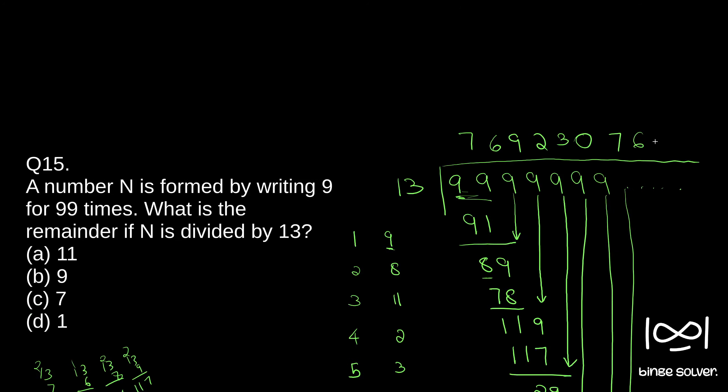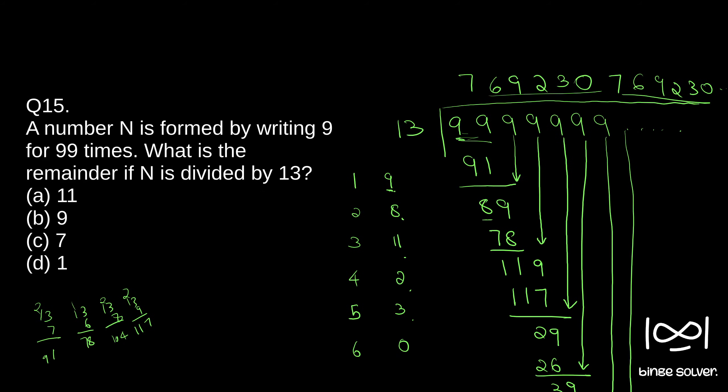Seven, six, nine, two, three, zero, it repeats. This part repeats. Our remainder will be nine, eight, 11, two, three, that repetition happens.